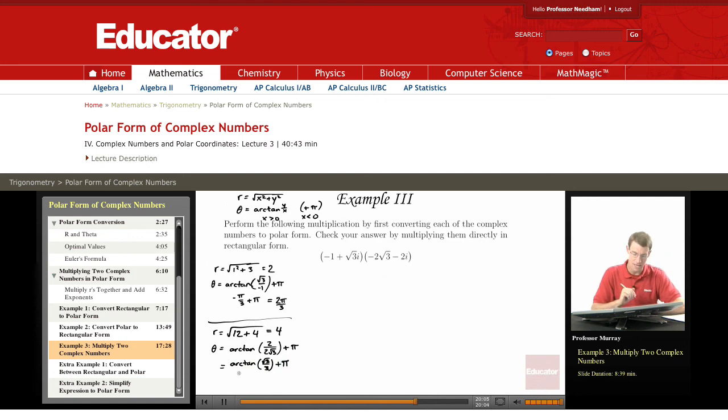Now again that's a common value. Arctan of root 3 over 3, I remember that's a common value. That's pi over 6 plus pi is 7pi over 6.